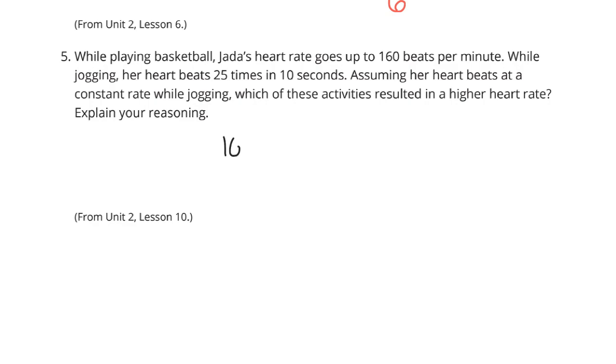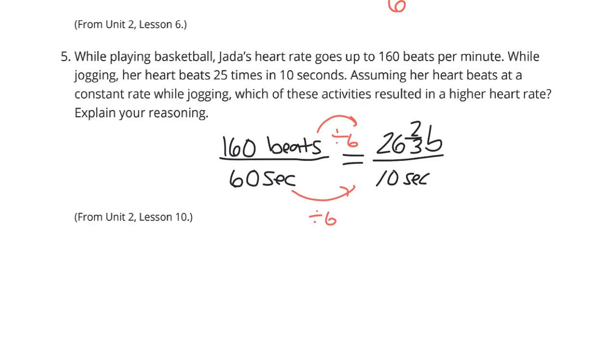A couple different ways to go about this. One way is to start with this 160 beats per minute idea. Now, each minute is 60 seconds. Well, can I get this down to 10 seconds? Sure. If I take 60 and divide it by 6, that's 10 seconds. So if I take 160 and divide it by 6, this is 26 and 2 thirds beats in those 10 seconds. So if we were to compare the basketball of 26 and 2 thirds beats per 10 seconds with the 25 beats in 10 seconds while jogging, it appears that the basketball had the higher heart rate.